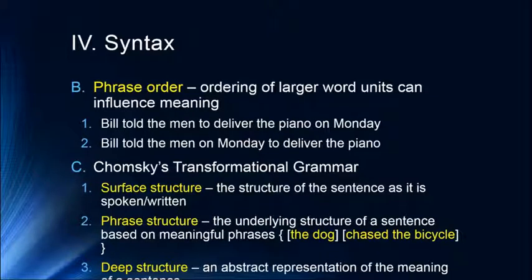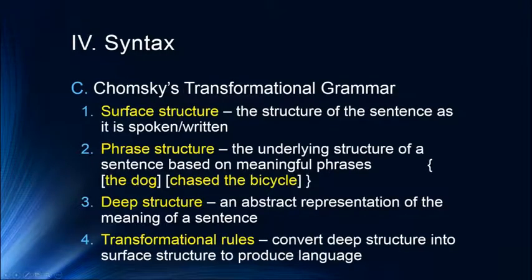That gets us to Noam Chomsky's transformational grammar. The first part is the surface structure — simply the structure of the sentence as it is spoken or written; it's the letters and the sounds. The phrase structure is the underlying structure of a sentence based on meaningful phrases, such as 'the dog chased the bicycle.' The deep structure is an abstract representation of the meaning of the sentence — what does it mean to say 'the dog chased the bicycle'? There are transformational rules we use to convert deep structure into surface structure to produce language.